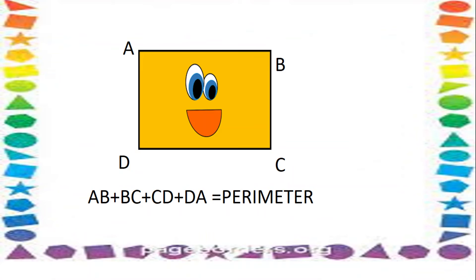Let's take some examples to make it more clear. Here is a rectangle. First of all, we have to mark the corners as A, B, C, D. Now, the perimeter is equal to AB plus BC plus CD plus DA.